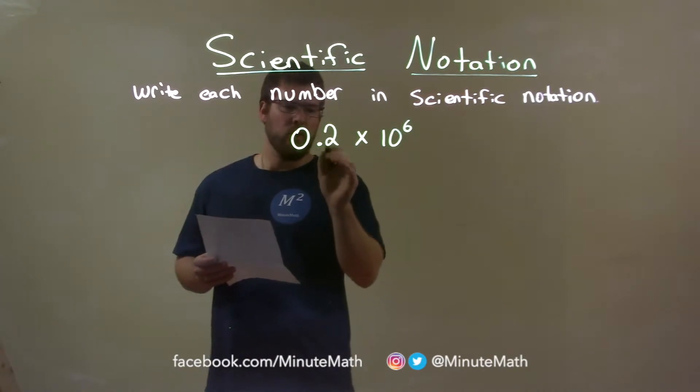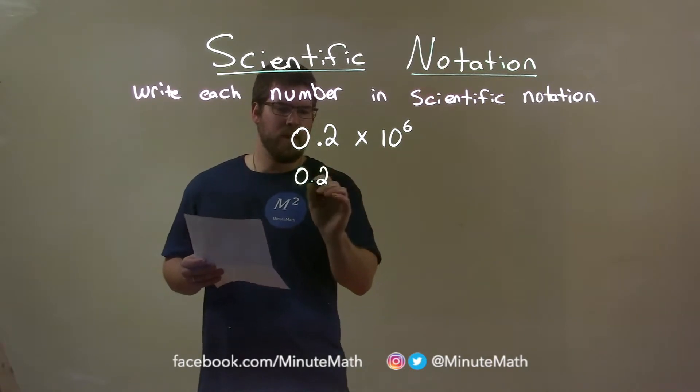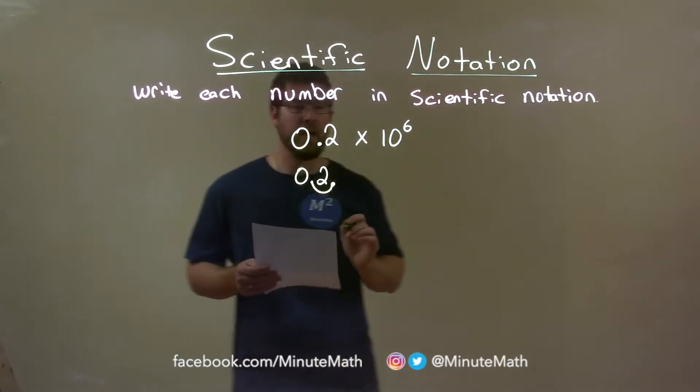Well, we have a decimal here. So what I want to do is I'm going to actually, let's go rewrite this. We have 0.2 and I'm going to move that one spot to the right. So my decimal place is going to be there.